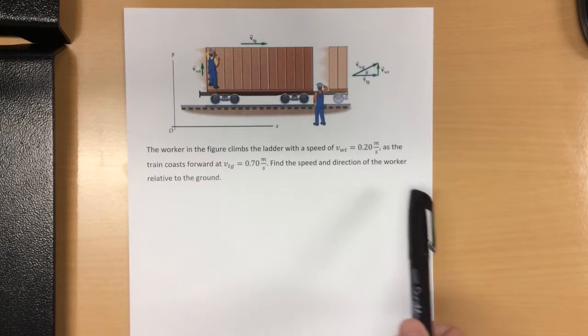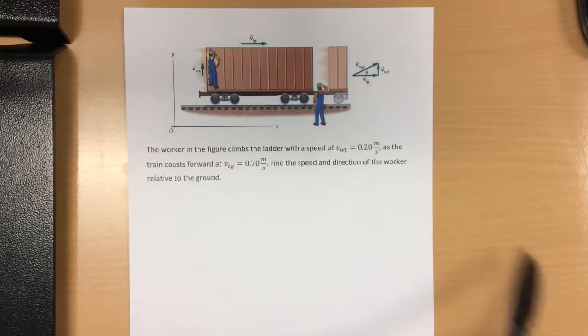The worker in the figure climbs the ladder with a speed of 0.2 meters per second as the train goes forward with a speed of 0.7 meters per second. We want to find the speed and direction of the worker relative to the ground.